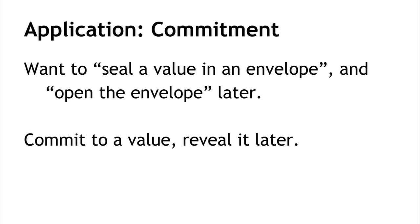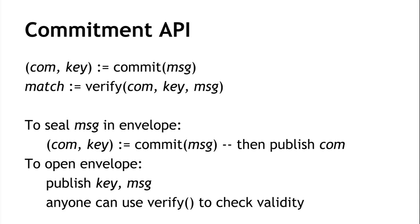An application of the hiding property is a commitment scheme — the digital analogy of sealing a value in an envelope on the table. The commitment API has two operations: commit to a message (returning a commitment and a key), then later verify given a commitment, key, and message. To seal a message, we commit and publish the commitment. To open the envelope, we publish the key and message, and anyone can verify using the commitment published earlier.